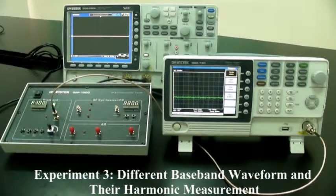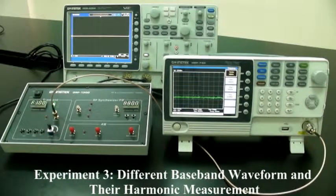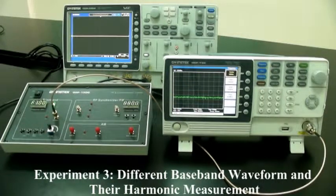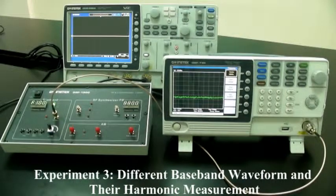The experiment principles are how to set the waveform on GRF-1300 and measure the harmonic spectrum. Switch to the triangle waveforms and measure the harmonic spectrum. We will become familiar with using a spectrum analyzer and how to use the GRF-1300 by analyzing the spectrum of a simple triangle signal.